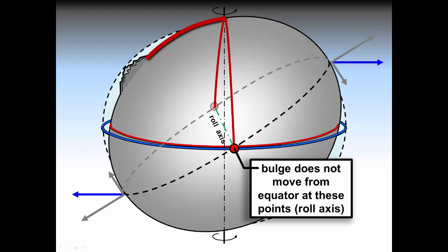Notice that at the roll axis, the bulge does not tip away from the new equator at all. However, 90 degrees from this, the bulge tips away from the equator the most. Notice that by definition, the location of the greatest tipping of the bulge aligns with the mass concentration, the Himalayas.